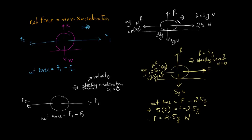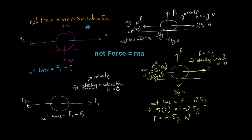It is given that this object is accelerating with an acceleration of 3 meters per second squared. The question is: find the value of mu. The net force equals the forward force of 25 Newton minus mu times 3G, which gives 3mu G. This is the net force.